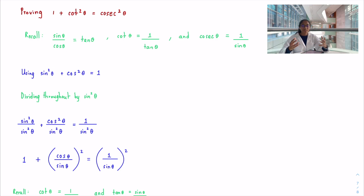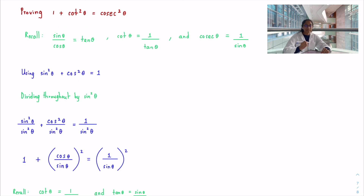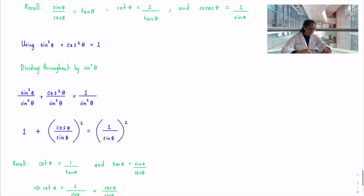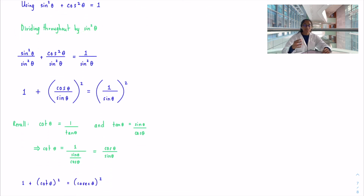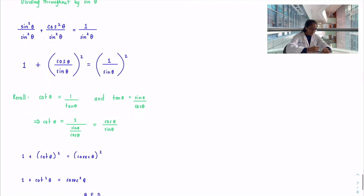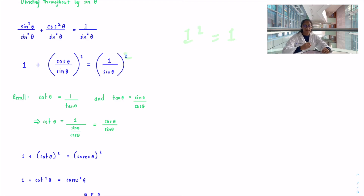The third identity to prove is 1 + cot²θ = cosec²θ. We need to recall: tan θ = sin θ / cos θ, cot θ = 1 / tan θ, and cosec θ = 1 / sin θ. We begin again with the first identity, sin²θ + cos²θ = 1, and this time divide every term by sin²θ. The first term becomes 1, and we apply the laws of indices to the others.